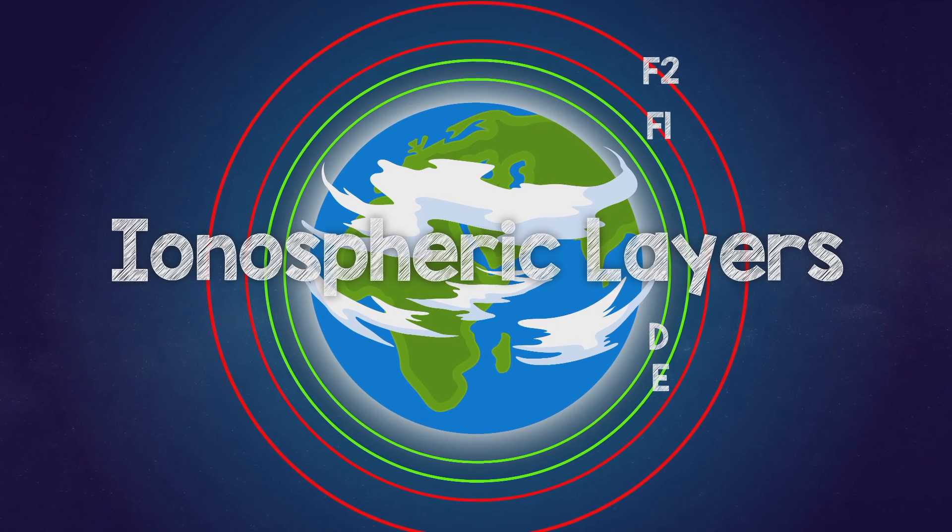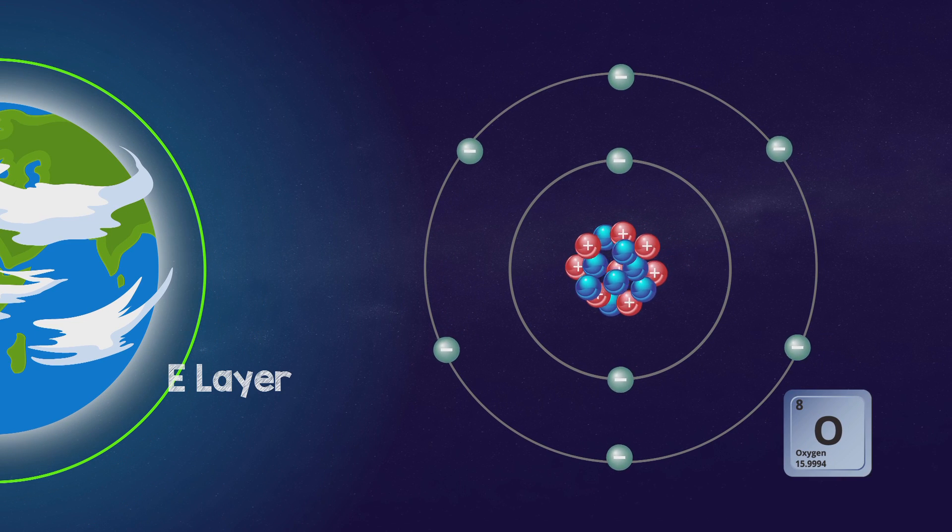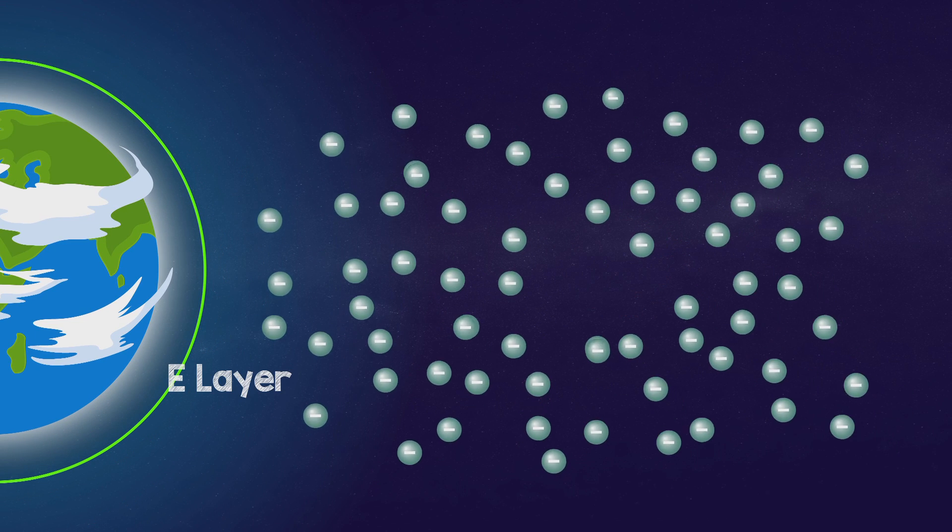When oxygen atoms in the E layer are ionised by soft x-rays from the sun, they lose electrons, forming electron clouds, which we call E clouds.